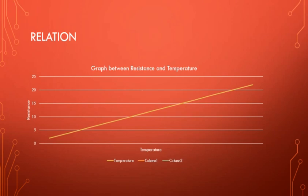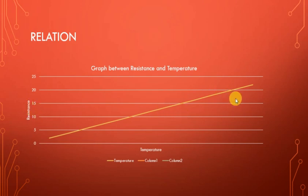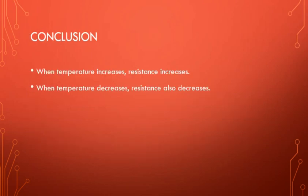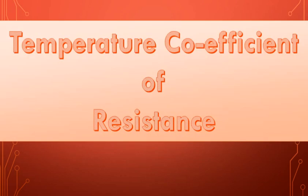As we are concerned about conductors and semiconductors, there exists a linear relationship between resistance and temperature. In metallic substances, when temperature increases resistance increases, and when temperature decreases resistance decreases. The conclusion is that this is a direct relationship between temperature and resistance.